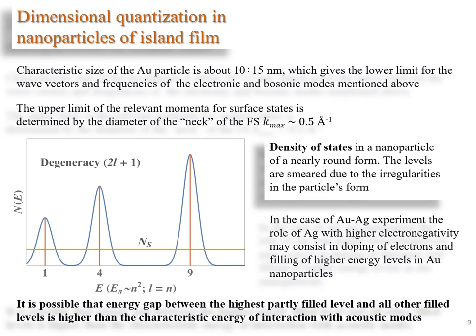Such a size for the gold particle is about 10-15 nm, which gives the lower limit for the wave vectors and frequencies of the electronic and bosonic modes mentioned above. The upper limit of the relevant momenta for surface states is determined by the diameter of the neck of the Fermi surface. In the case of gold-silver experiment, the role of silver with higher electronegativity may consist in doping of electrons and filling of higher energy levels in gold nanoparticles. It is possible that energy gap between the highest partly filled level and all other filled levels is higher than the characteristic energy of interaction with acoustic modes in the system.